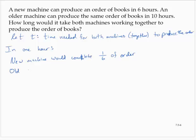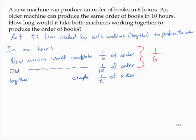The older machine would complete one-tenth of the order. And together, they would complete one over T of the order. But we also know that if the new machine can complete one-sixth of the order in an hour, and the old machine can complete one-tenth of the order in an hour, then together we would have one-sixth plus one-tenth of the order together.